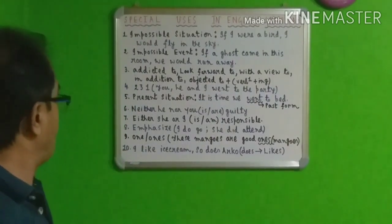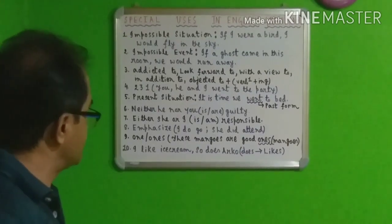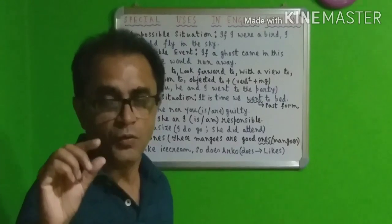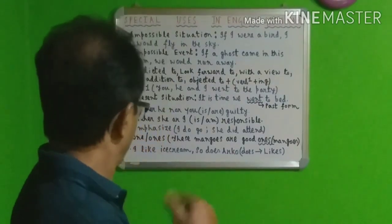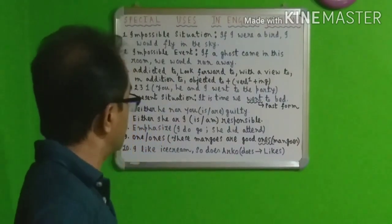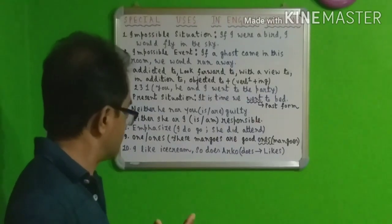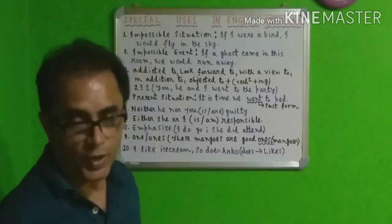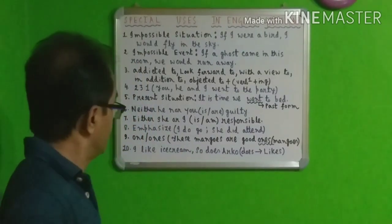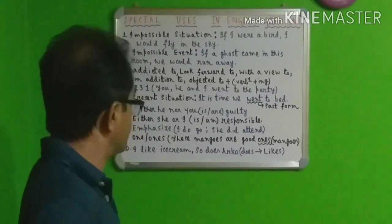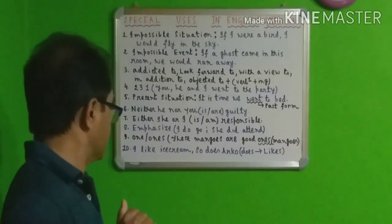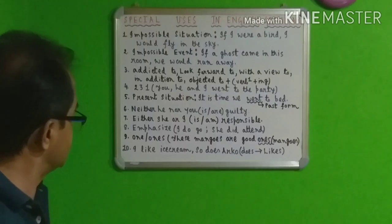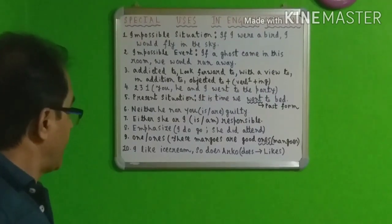Number nine: 'one' and 'ones.' Sometimes we replace a noun by using 'one' or 'ones.' For example: 'These mangoes are good mangoes' — we can say that, but it is better to say 'These mangoes are good ones.' Here 'ones' refers to mangoes.